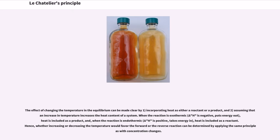The effect of changing temperature on equilibrium can be understood by incorporating heat as either a reactant or a product, and by assuming that an increase in temperature increases the heat content of a system. When the reaction is exothermic (delta H is negative), heat is included as a product. When the reaction is endothermic (delta H is positive), heat is included as a reactant. Hence, whether increasing or decreasing the temperature favors the forward or reverse reaction can be determined by applying the same principles as with concentration changes.